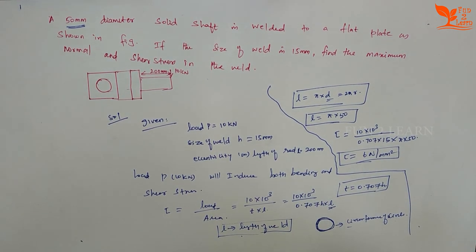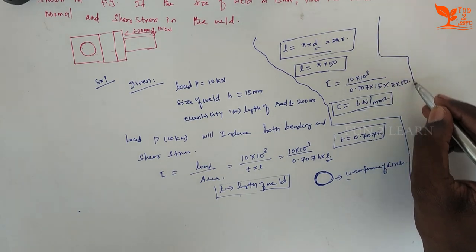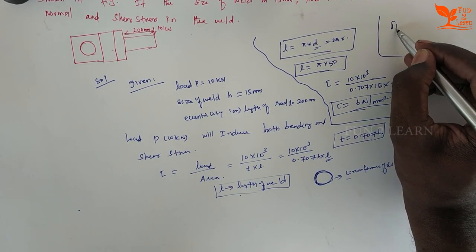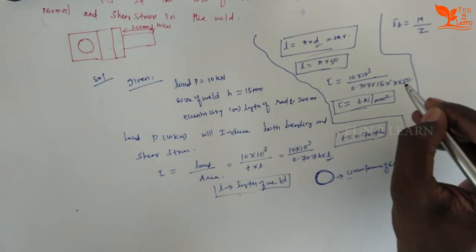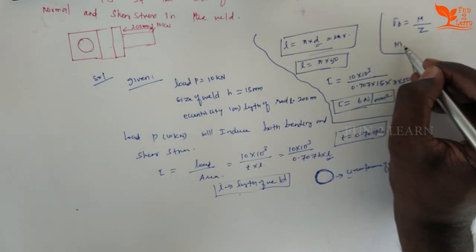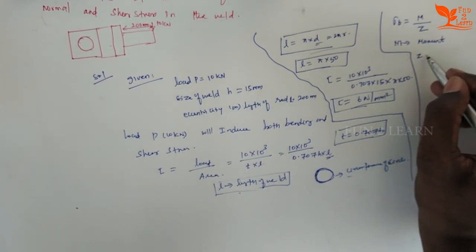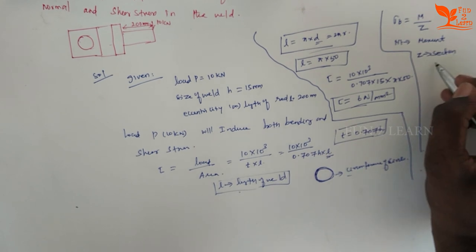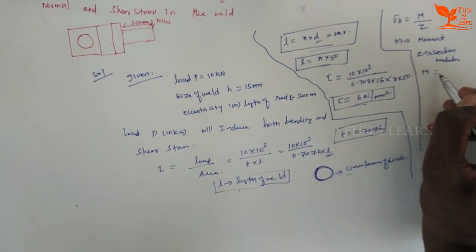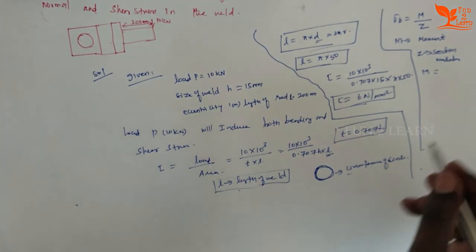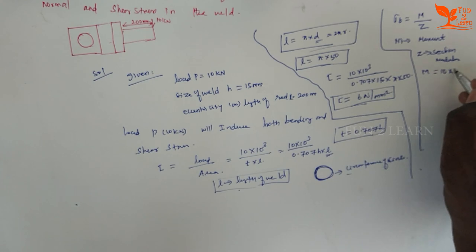So we are getting tau equal to 6 N/mm². Now we have bending stress. Bending stress: sigma_b equals M divided by Z. M is the bending moment and Z is the section modulus. M equals load multiplied by distance, so M = 10 kN × 200mm = 10 × 10³ × 200 = 2 × 10⁶ N·mm.